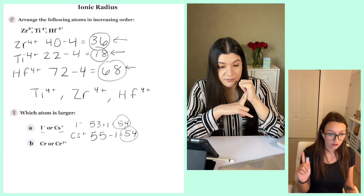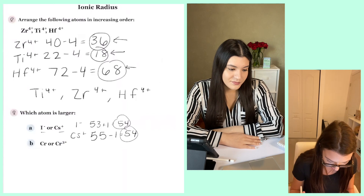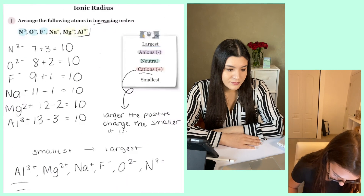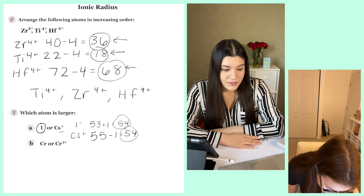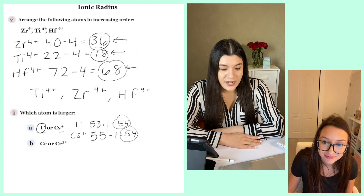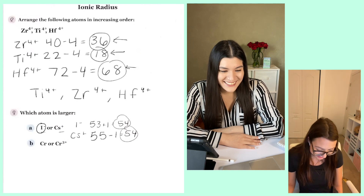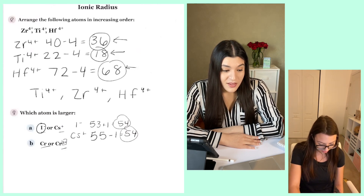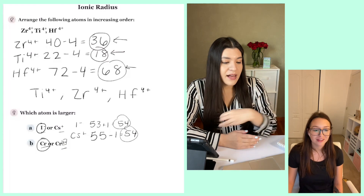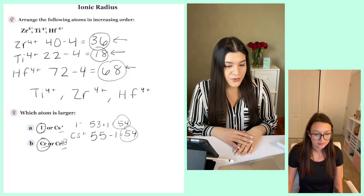Because they're two completely different charges, I have to use that cation and anion rule. The trend is only for when they have the same charge and are in the same column. Anions are the largest, so iodine would be first. And whenever you have the same element but different charges, you go back to the rule without needing to write out the electrons.